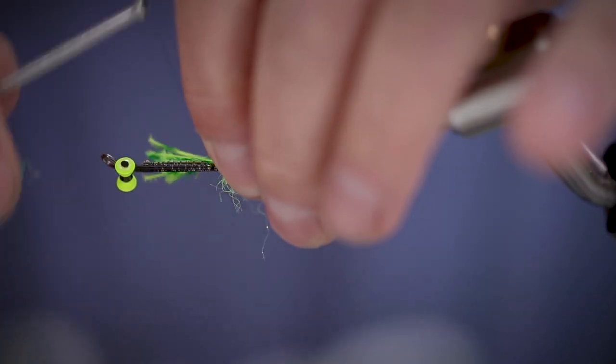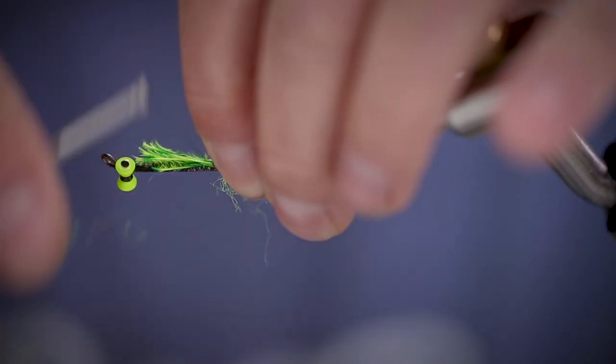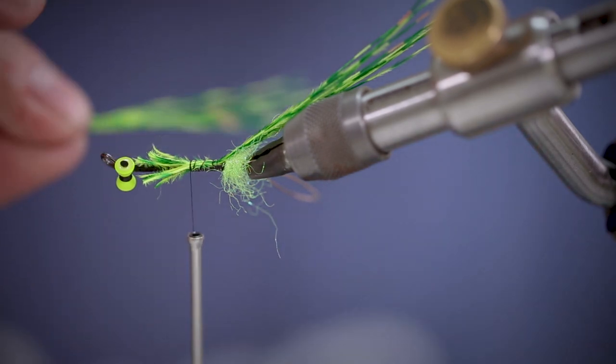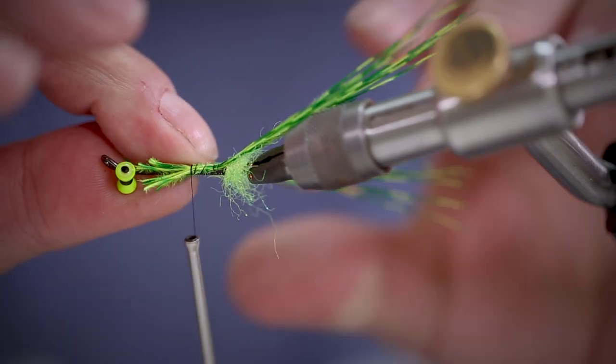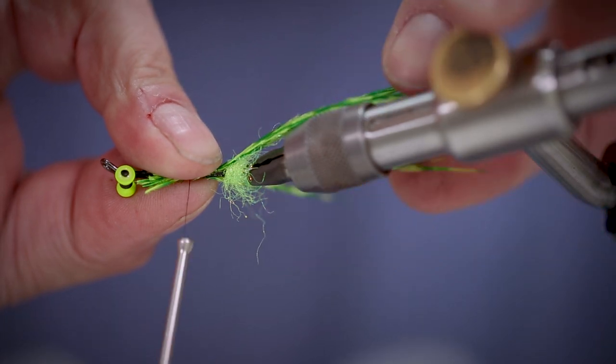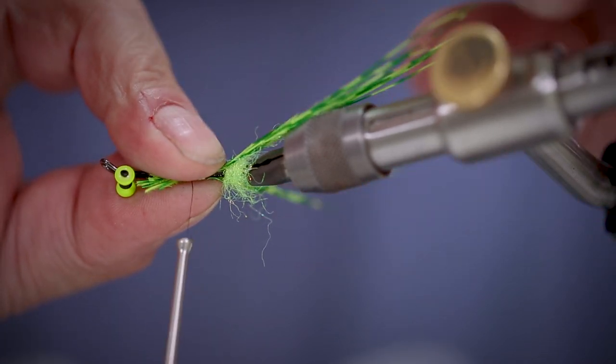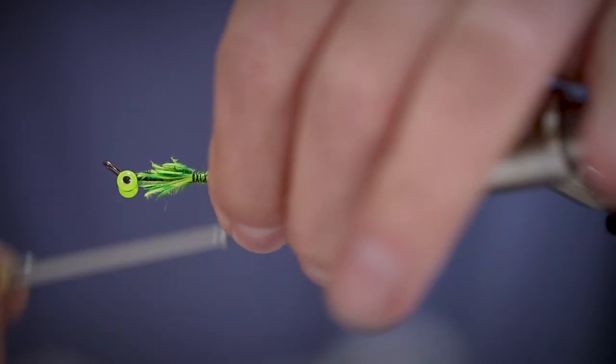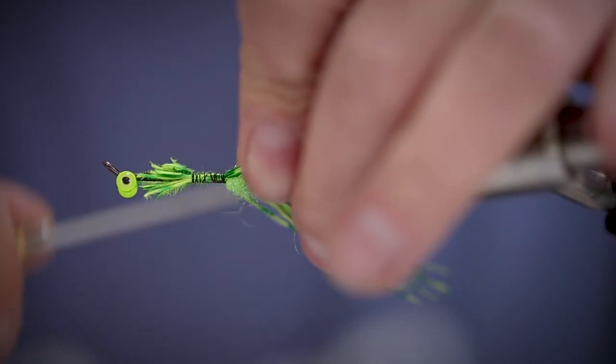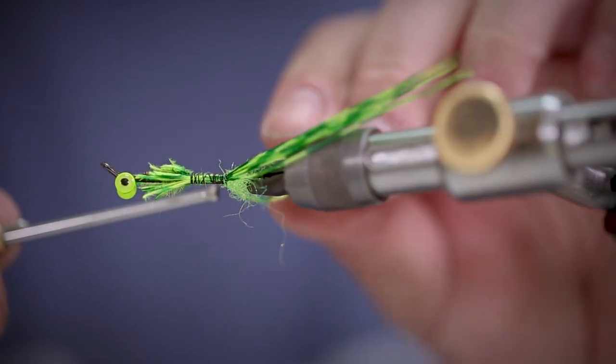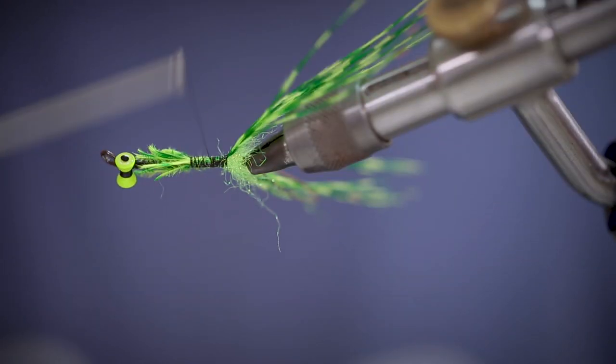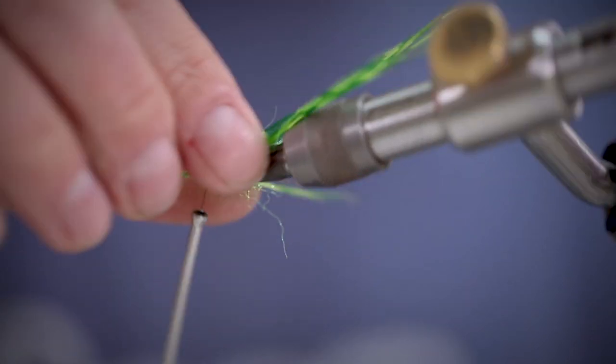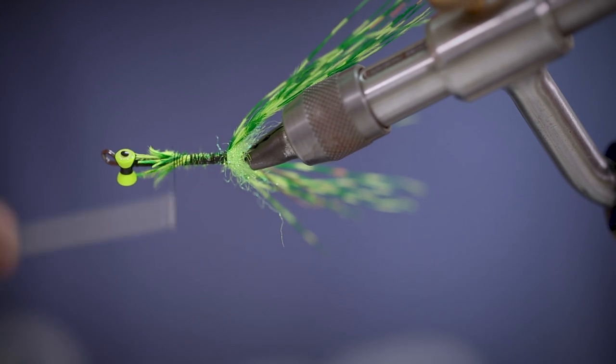Next we're going to tie in some Barred Feather Fibers. We're going to tie these into a V-shape on the side. Tie in the waste materials to build up your body and keep everything nice and secure.